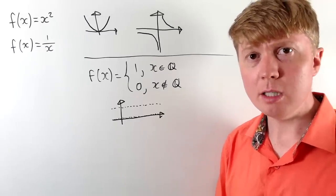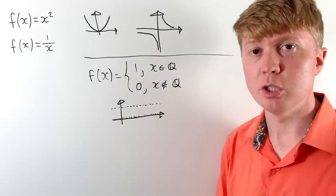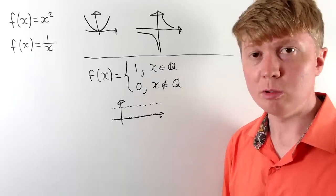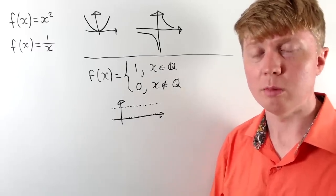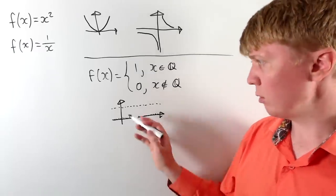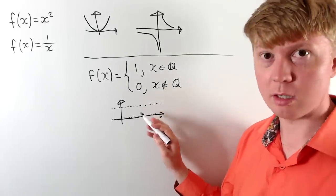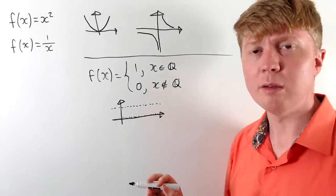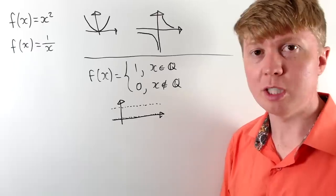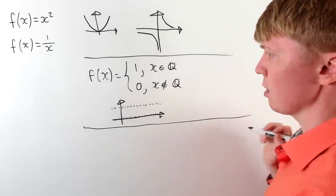What about having a function which is continuous at a single point but not continuous anywhere else? The intuition of being able to draw a function without lifting your pen doesn't really make sense here, because even for a function continuous nowhere, you can draw it at a single point without lifting your pen. So we need a more rigorous, more formal definition of what a continuous function actually is.